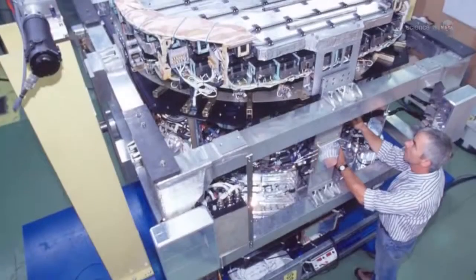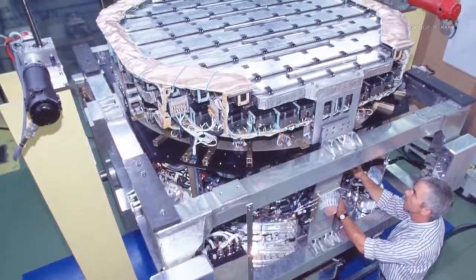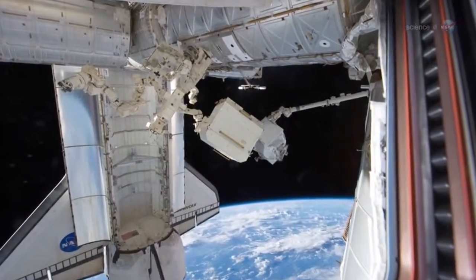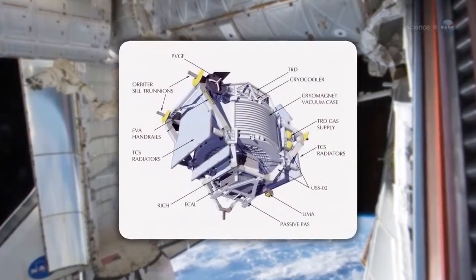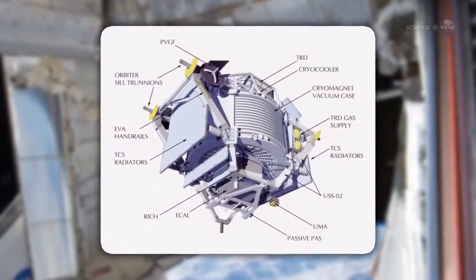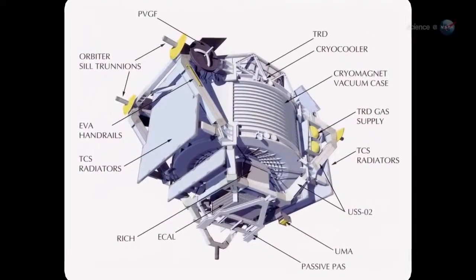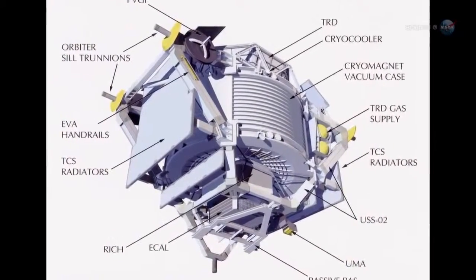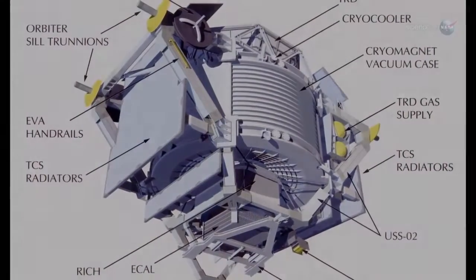The Alpha Magnetic Spectrometer, AMS for short, was delivered to the ISS by the Space Shuttle Endeavour on its final flight in May 2011. In its first 18 months of operations, from May 19, 2011 to December 10, 2012, the AMS analyzed 25 billion cosmic ray events. Of these, an unprecedented number were unambiguously identified as positrons.